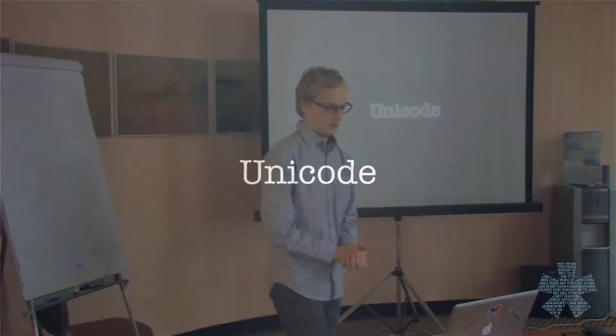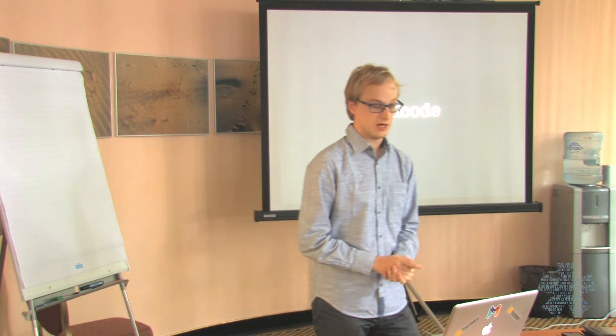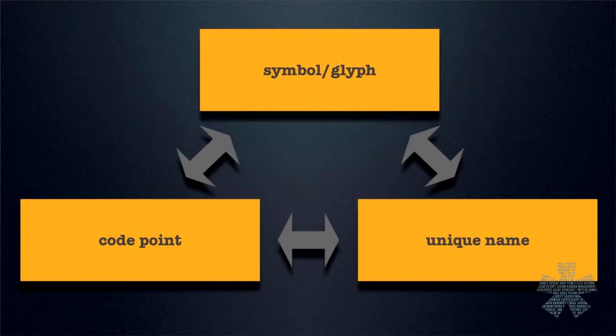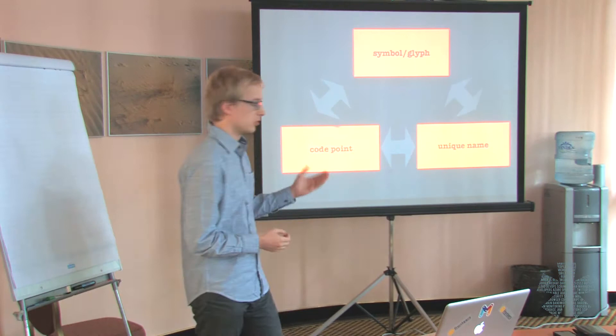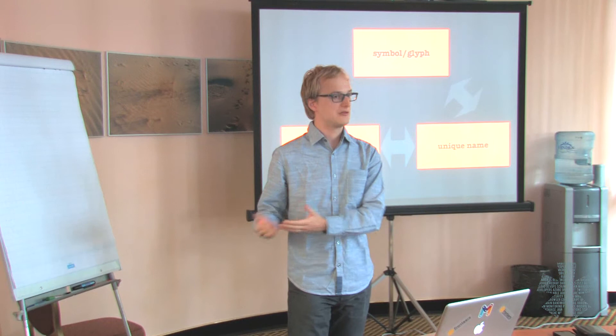So before we dive into that, let's all get on the same page about Unicode. I'm going to tell you just the basic stuff you need to know about Unicode in order to support Unicode strings in JavaScript correctly. It's easiest to think of Unicode as a kind of database that maps symbols to numbers — these numbers are called code points — and also to a unique name for each symbol. The advantage is that you can easily refer to a symbol without having to use the symbol itself, because you can just refer to its code point or to the unique name.